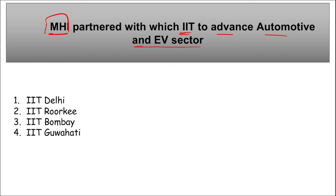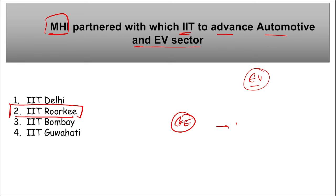The Ministry of Heavy Industries (MHI) partnered with IIT Roorkee to advance the automotive and electric vehicle sector. The MoU aims to create a Centre of Excellence and an industry accelerator at IIT Roorkee. IIT Roorkee has also partnered with the International Centre for Automotive Technology (ICAT) in Manesar, Haryana. The total cost of the project is estimated at ₹24,000 crore, with MHI contributing nearly ₹20 crore.